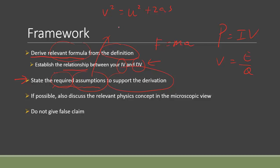For example, if you use the kinematics equation v² = u² + 2as, the assumption is that acceleration must be constant. In a real practical activity, that may not hold, making that equation's assumption false — which you can then evaluate at the end of your IA. Or if you're working with magnetic fields, an assumption might be that there is no external magnetic field, such as Earth's magnetic field not being considered in your framework.